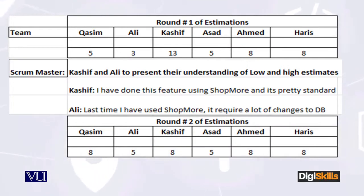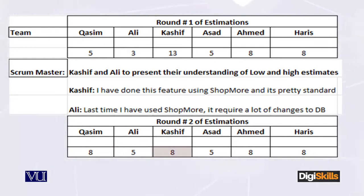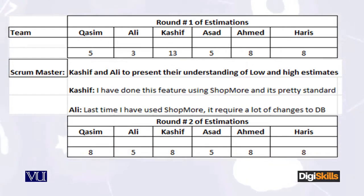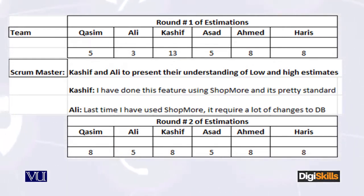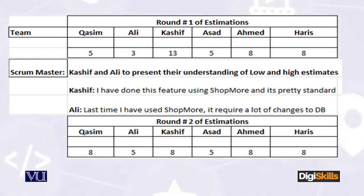Let's do round 2. In the second round of estimations: Kasim gives 8, Ali gives 5, Kashif gives 8, Asad gives 5, Ahmed gives 8, and Haris gives 8. The team is nearly converged. Kashif's estimate came down from 13 to 8. We usually do multiple rounds and arrive at a sort of average.